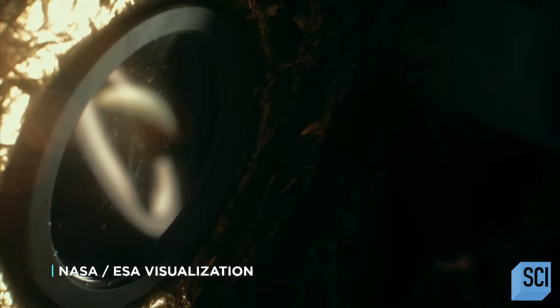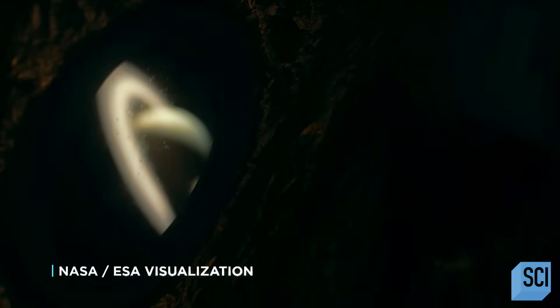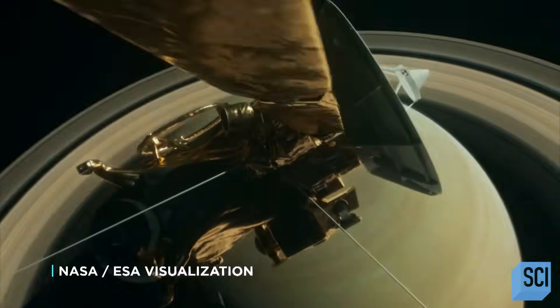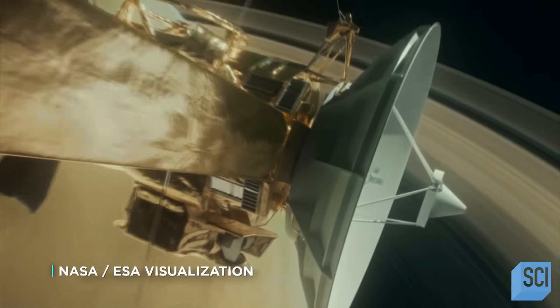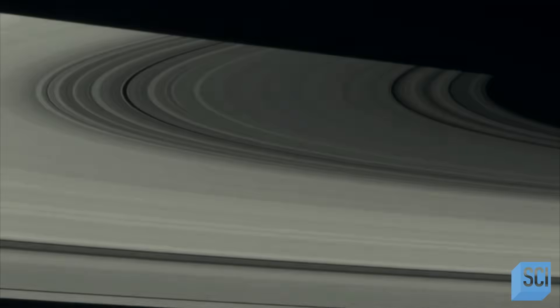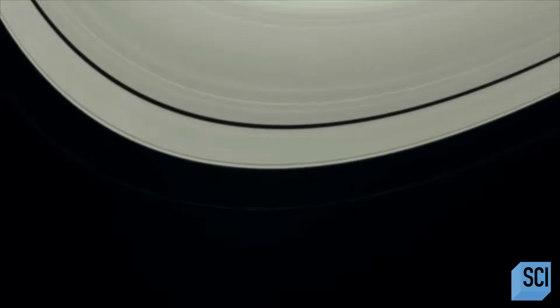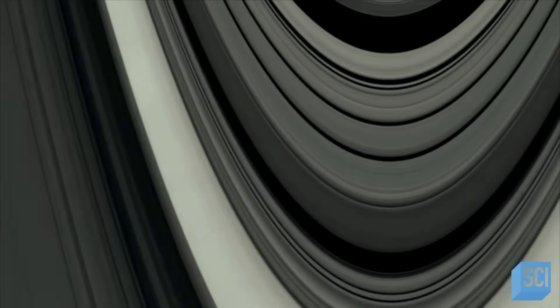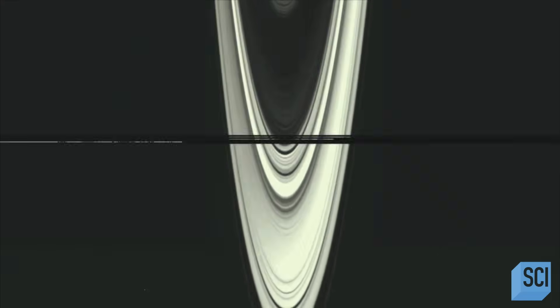Scientists used to think the rings were as old as Saturn itself. But when a space probe called Cassini visits Saturn, it reveals an uncomfortable truth. Saturn's rings are far too clean. The rings of Saturn are so bright and beautiful because they're made of trillions of particles of pristine ice. The ice itself is actually not very dirty. It's very reflective. You almost have this beautiful mirror around Saturn.